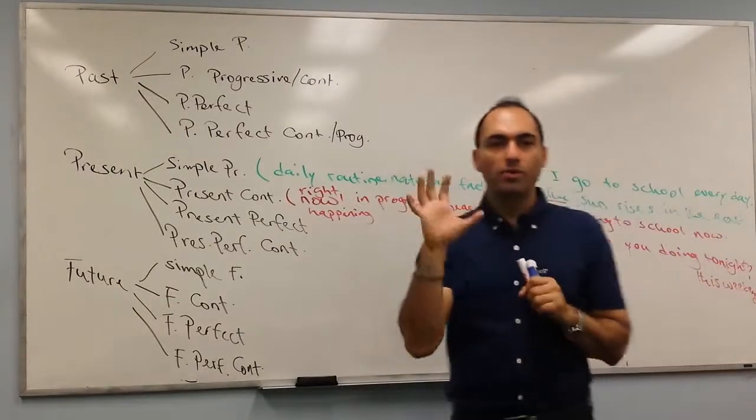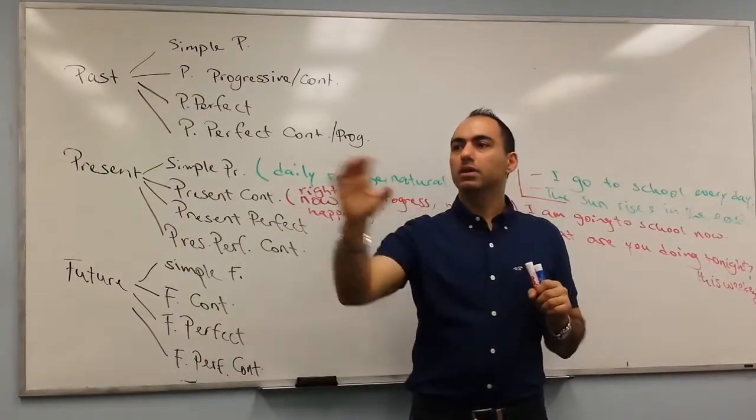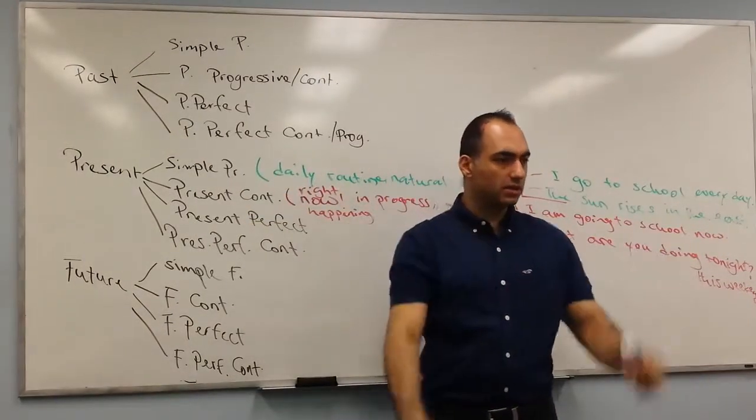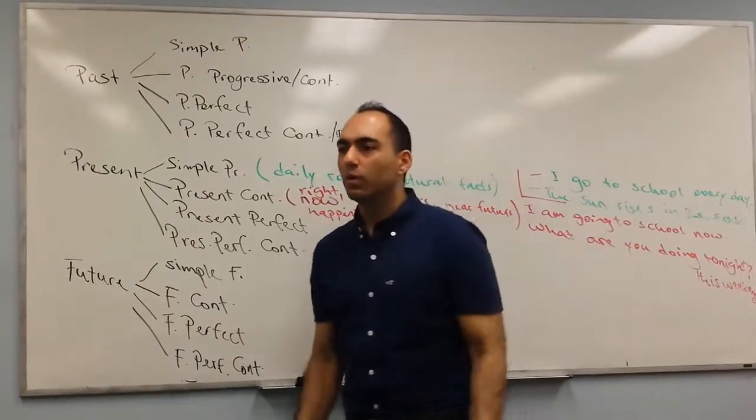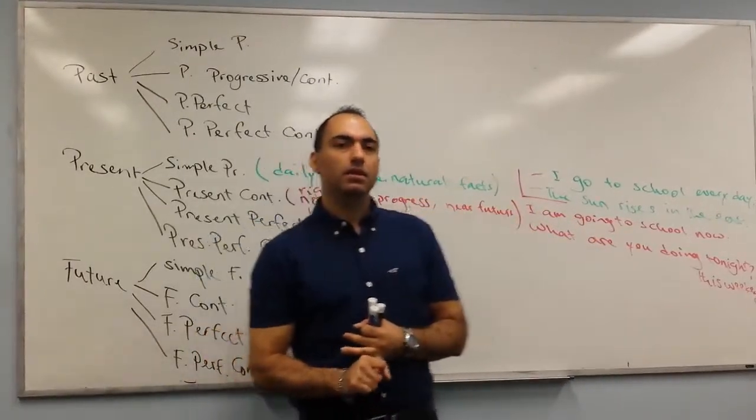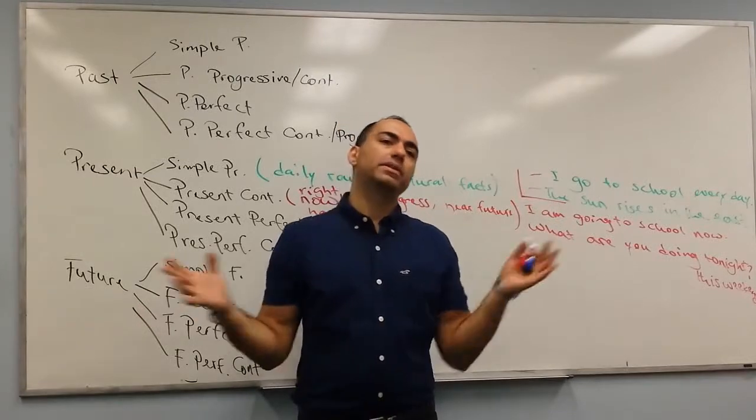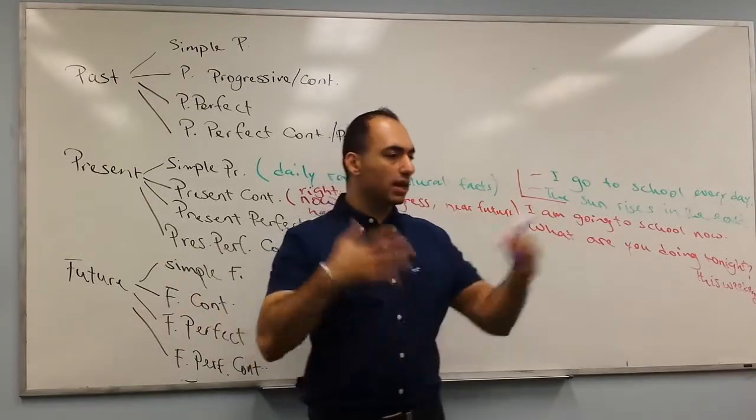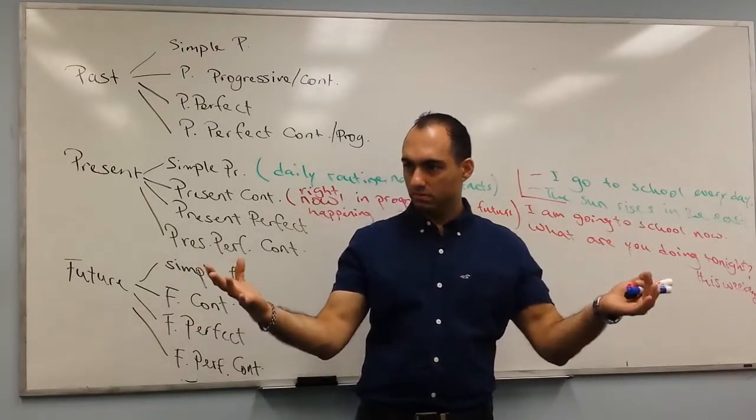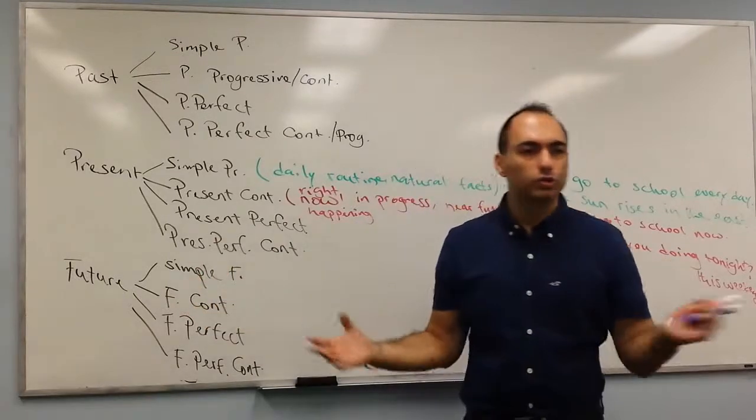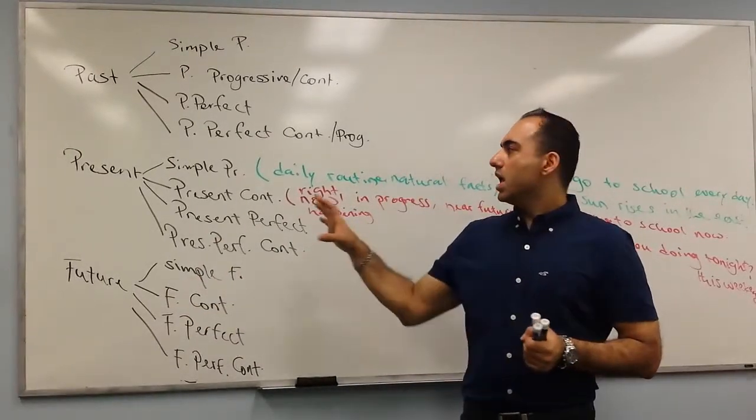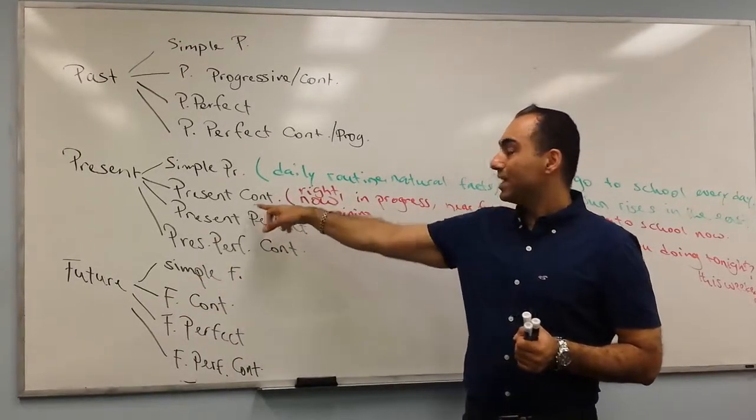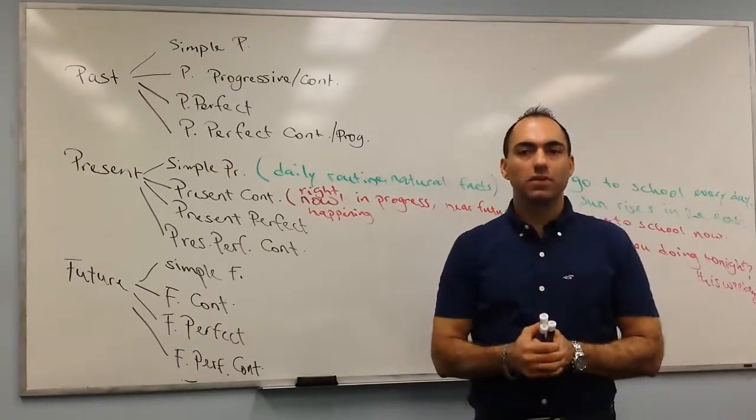So let's remember one more time, a review. Simple present: daily routine, things you do every day. What time do you wake up? I wake up at six o'clock, I wake up at seven o'clock. It's a daily thing. I go to school every day. But when it comes to present continuous, what are you doing now? I'm sitting.